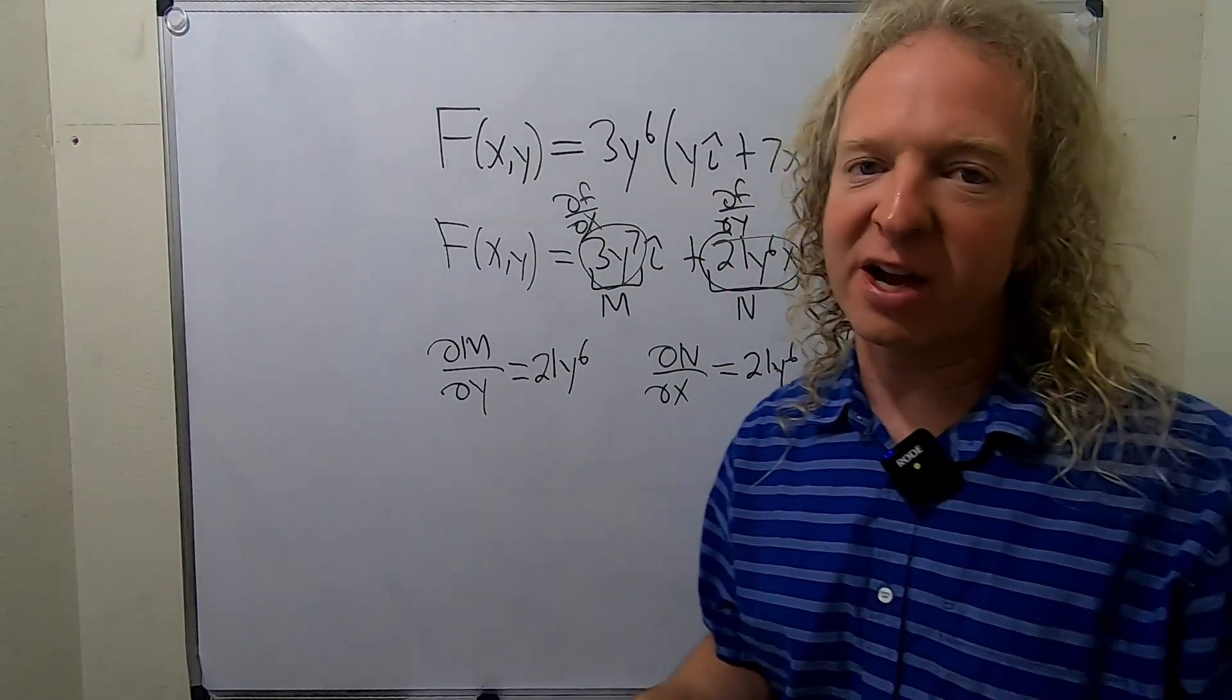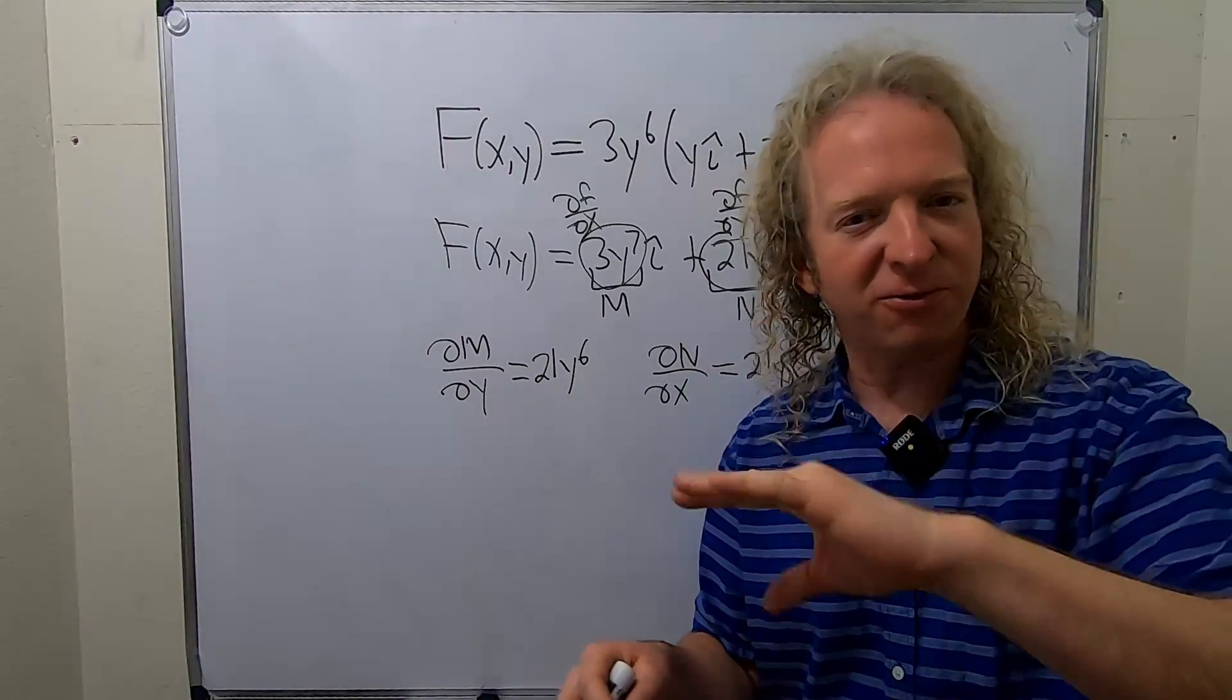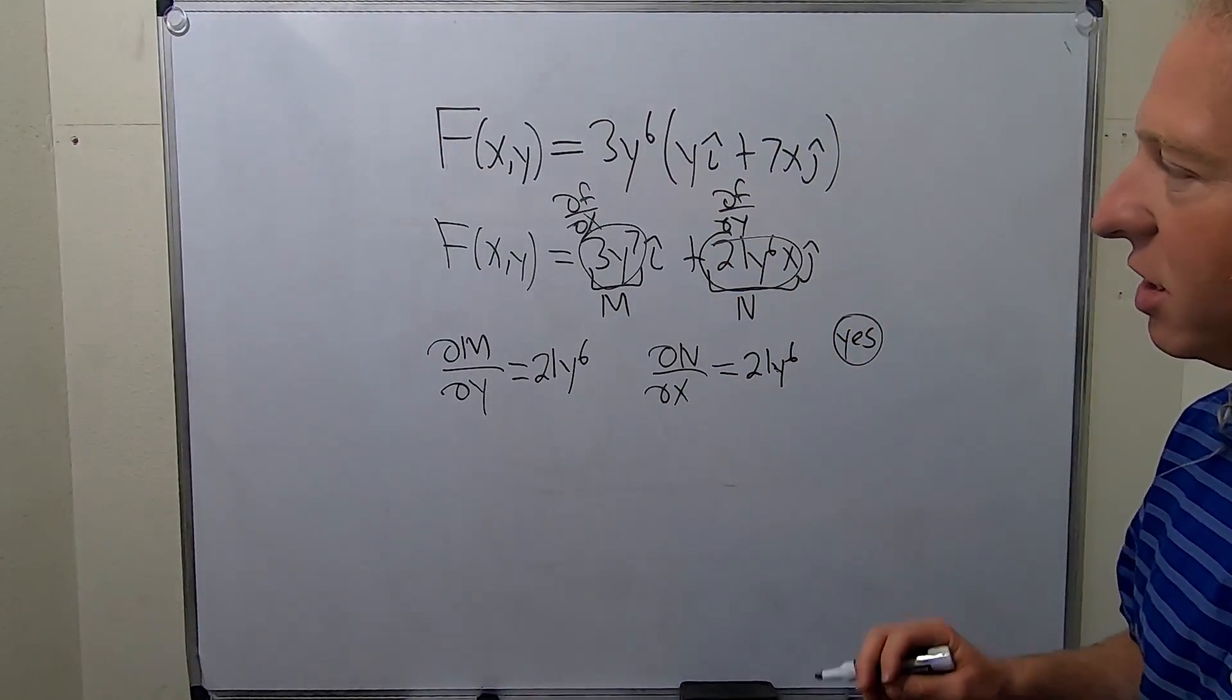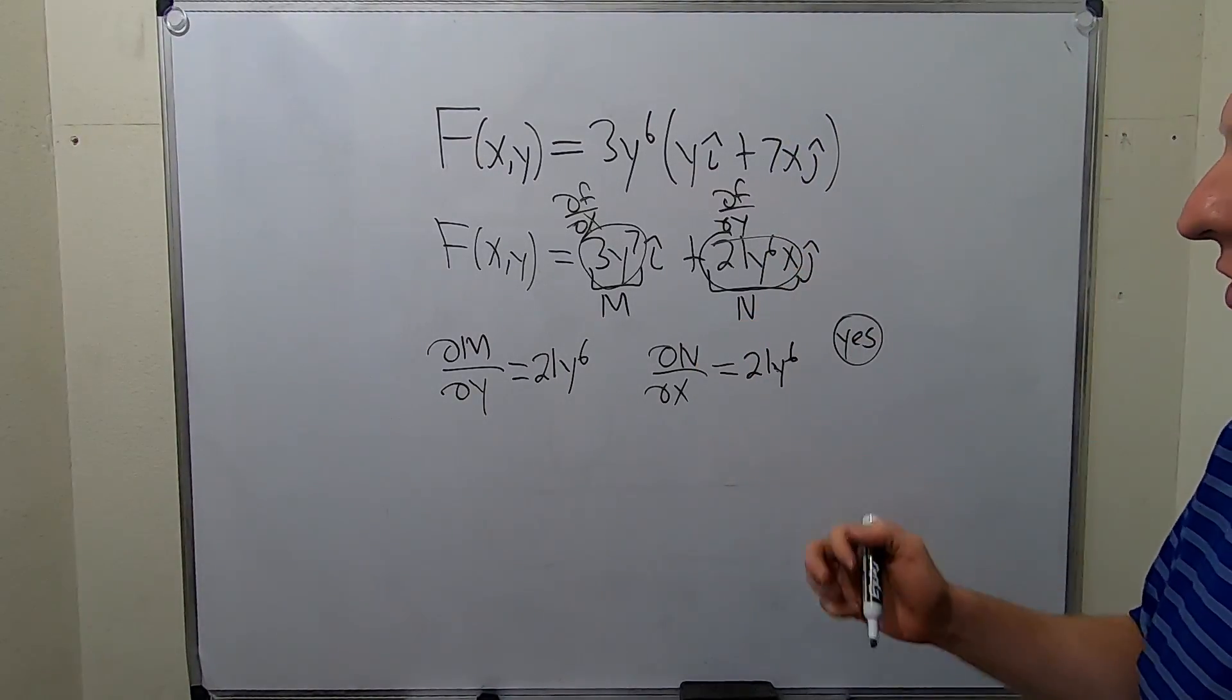There's a couple different ways to find little f. You can integrate one, differentiate—you can integrate and differentiate, or you can take the cheap route, which is just integrate both. Let's do it the fast way in this problem. So we're just going to integrate both.